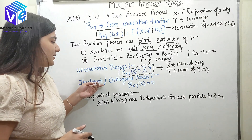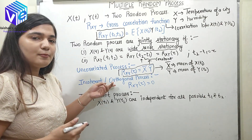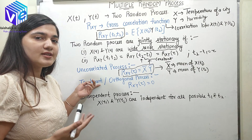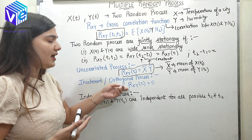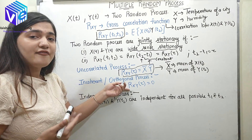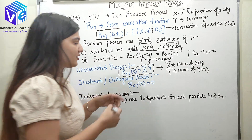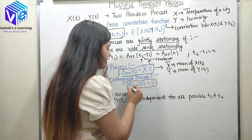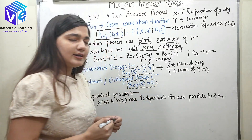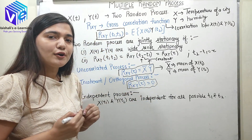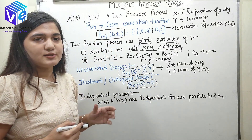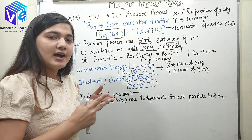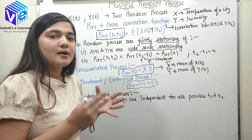Now coming to the next property: the orthogonal process, also called the incoherent process. These are processes where the cross correlation function R_XY(τ) equals zero. Whenever R_XY(τ) is zero, it is called an orthogonal process, meaning X(t) and Y(t) are jointly orthogonal in nature.